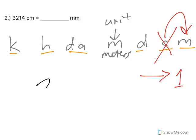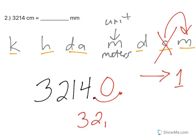So I start with my number, 3,214 decimal point at the end. And I need to move it one place to the right. So one place to the right, there's my new decimal point. In the hump comes a zero. So my final answer is 32,140 millimeters.